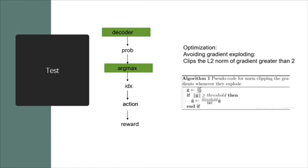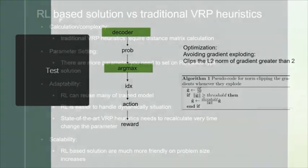We apply gradient clipping in optimizer, which clips the L2 norm of gradient greater than 2 to avoid gradient exploding.